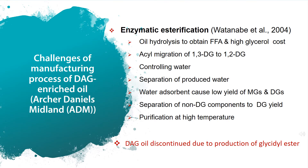The manufacturing process of DAG-enriched oil is challenging. ADM company used to use the esterification method, which has some drawbacks, such as oil hydrolysis and acyl migration of 1,3-DG to 1,2-DG, which reduces the healthier isomer. Besides, this method needs post-reaction procedures at high temperature, which leads to the production of glycidyl ester. In fact, DAG oil was voluntarily removed from the market due to this possible carcinogenic compound.